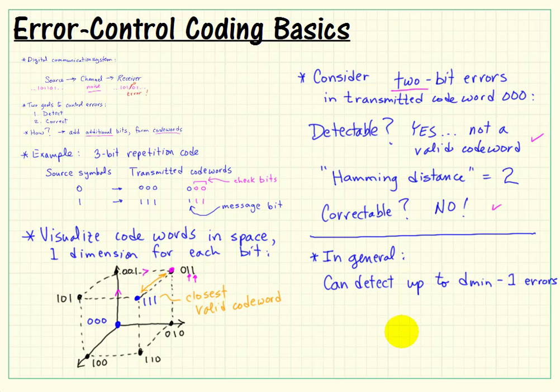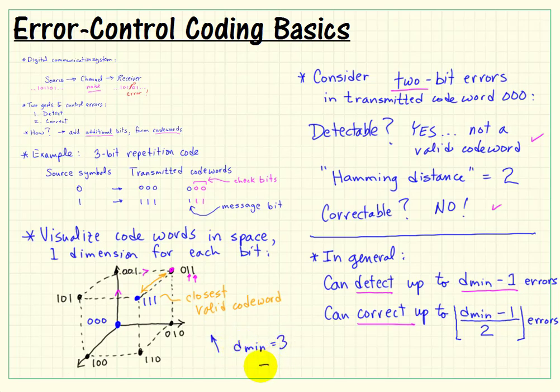We can generalize these results a bit. We say we can detect up to D min minus 1 errors. The critical point here is we need to know the minimum Hamming distance of a code. We can correct up to essentially half of D min. It's actually D min minus 1 divided by 2. And to ensure that you're not trying to correct fractional bits, we do the floor operation, which says go to the next lower integer from that calculation. So D min for the 3-bit repetition code is 3. That says we can only correct up to a single bit error, but we can actually detect up to 2 bit errors.